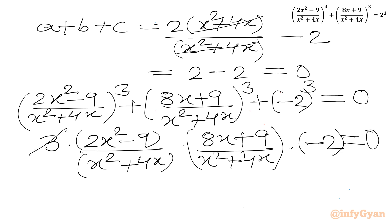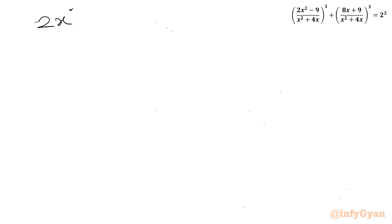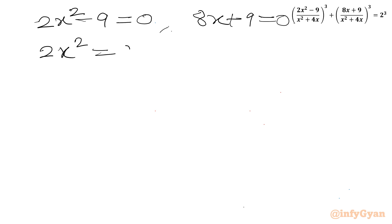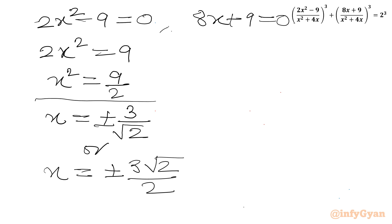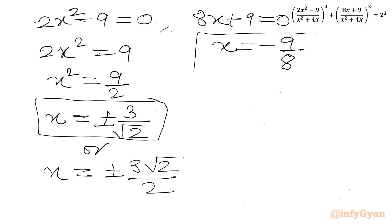So the conclusion is 2x squared minus 9 equals 0 and 8x plus 9 equals 0. From the first equation, x squared equals 9 over 2, giving x equals plus or minus 3 over root 2, or equivalently plus or minus 3 root 2 over 2. From the second equation, x equals negative 9 over 8. So the same three results are confirmed. I hope you liked this video — thank you so much for watching. Don't forget to like, share, and subscribe. Bye bye till next video. Good luck!